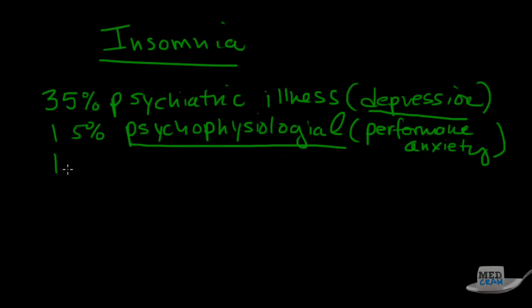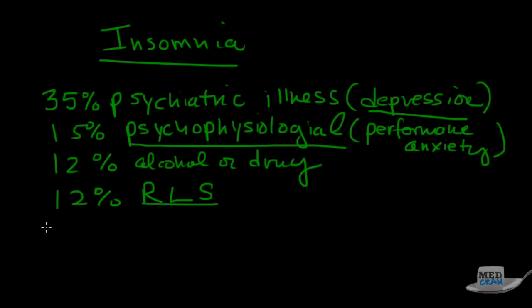12% is alcohol or drug. Yes, these can cause insomnia. Another 12% is restless leg syndrome, something we'll talk about as well. 10% is circadian rhythm disorder. And finally, the last 9% is kind of a weird diagnosis. It's actually where they think they can't sleep, but they actually are sleeping if you test them. It's called paradoxical.